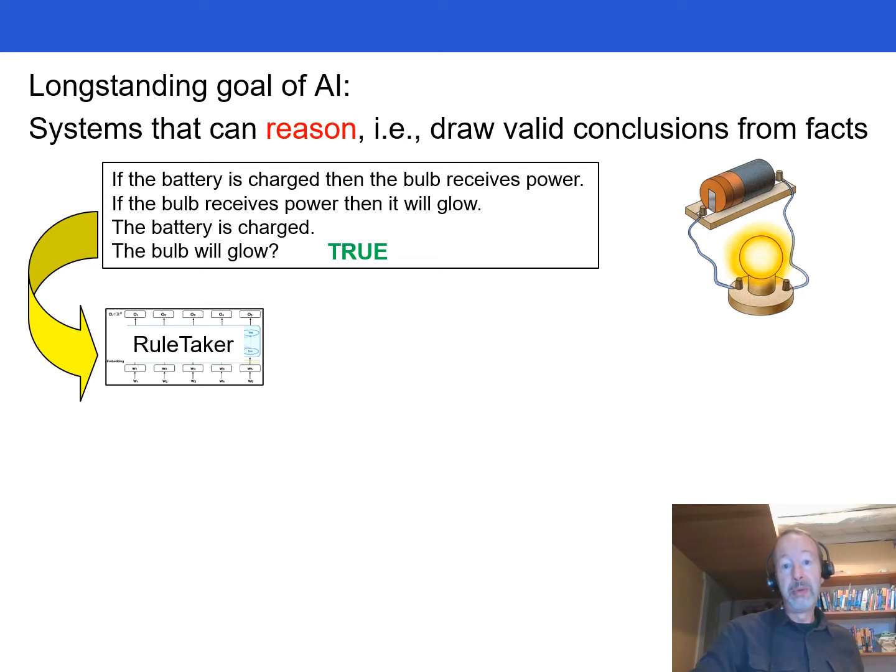And we would expect the system to give the answer true. In fact, this is what RuleTaker concludes with high reliability, but there's no explanation or proof to justify its reasoning.